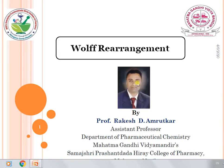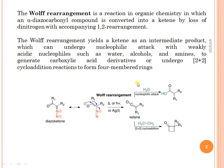Good morning. Today we will discuss the Wolff rearrangement. The Wolff rearrangement is a reaction in organic chemistry in which an alpha-diazo carbonyl compound — a carbonyl compound attached with a diazo functional group — is converted into ketene by loss of dinitrogen with an accompanying 1,2-rearrangement. In short, the Wolff rearrangement is the conversion of a diazo carbonyl compound into ketene by loss of dinitrogen with a 1,2-rearrangement.